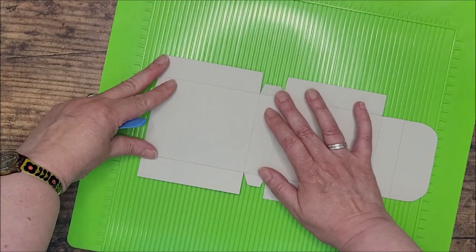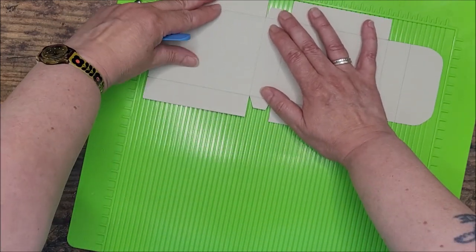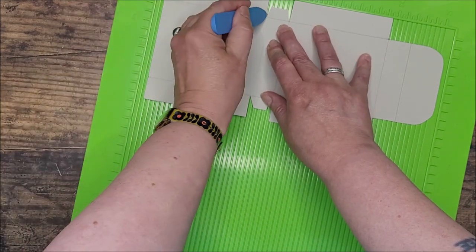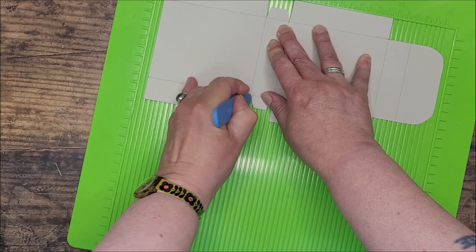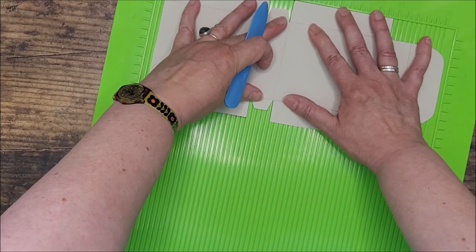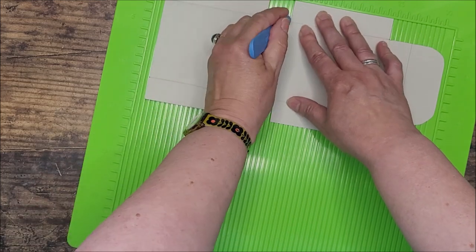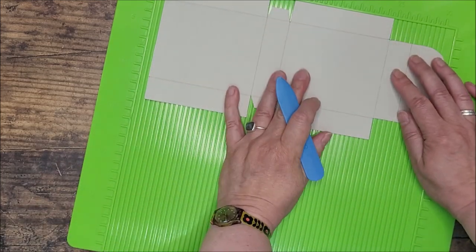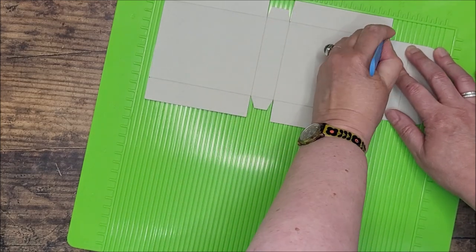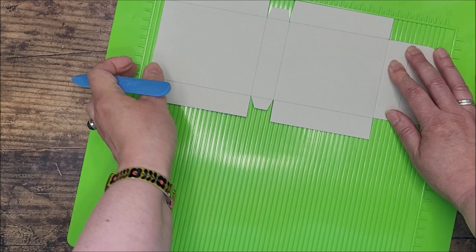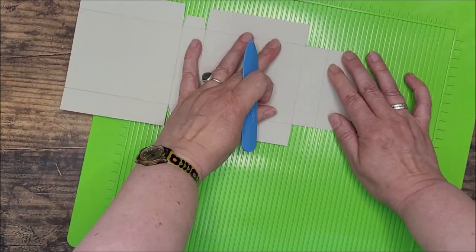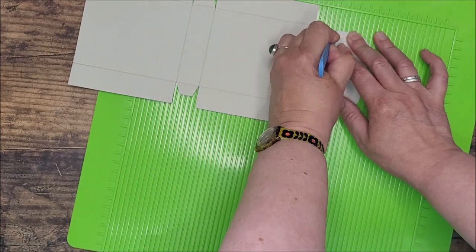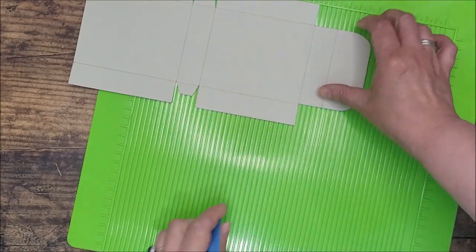Then I move down 10.3 centimeters to do the next one, and another 2.2 centimeters for that final one. I'm just going to line this up with one of the lines on my scoreboard and score it so I get a nice clean crease. You could skip this step and just fold it on the line, but scoring it just makes it look that little bit neater, especially if your cardstock is quite a heavy weight.